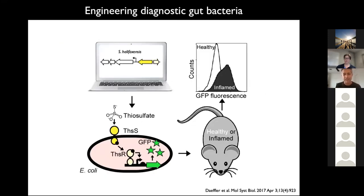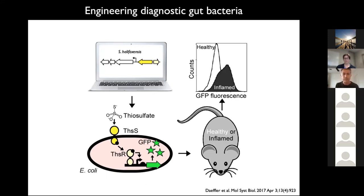My lab has also been interested in using two-component systems as sensors for biomedical applications — specifically engineering diagnostic gut bacteria. A couple of years ago, we found the first known biosensor of thiosulfate, an oxidized form of sulfur that occurs in the gut during inflammation. We engineered a probiotic strain of E. coli to sense thiosulfate and produce GFP in response, administered those bacteria into healthy and inflamed mice, and used flow cytometry to detect specific activation of our thiosulfate sensor in inflamed mice.